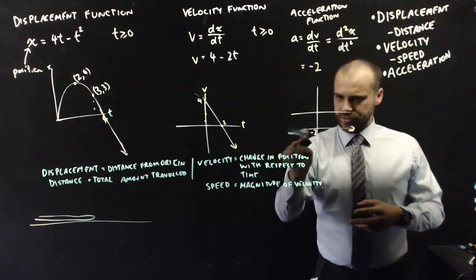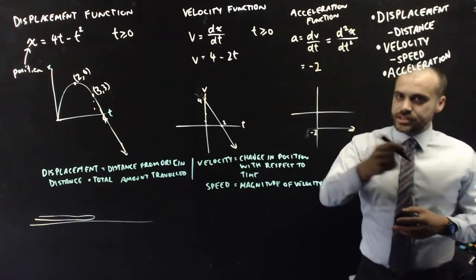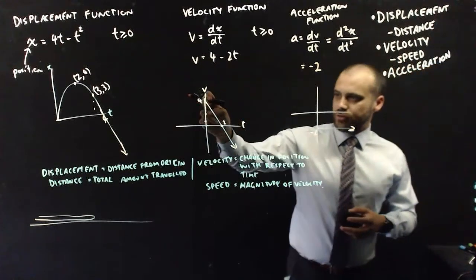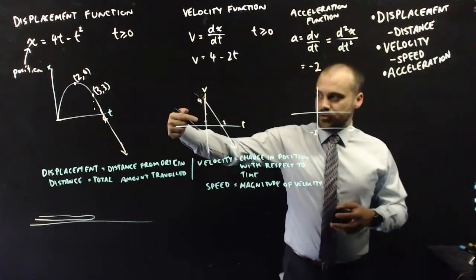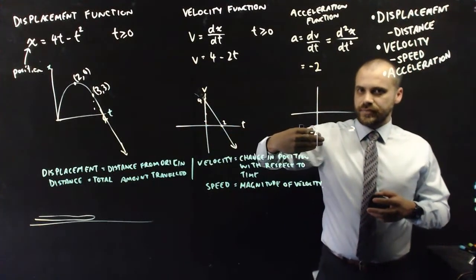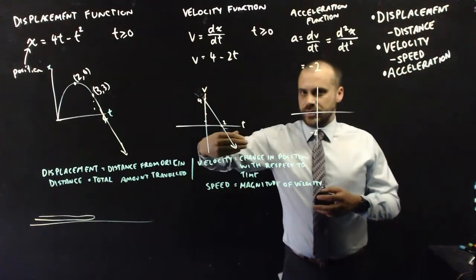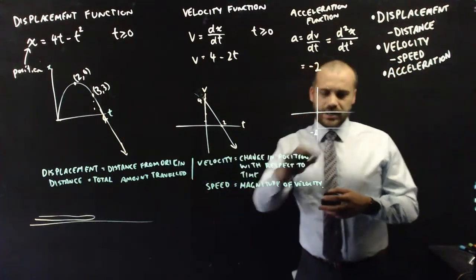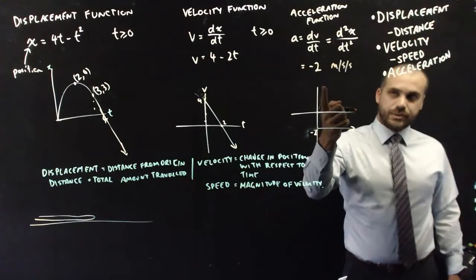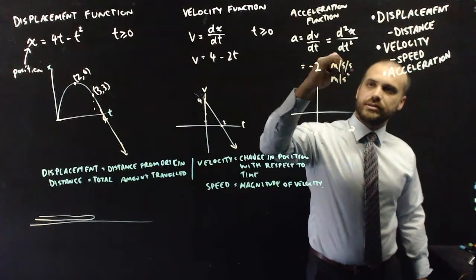That's hard for a lot of people to interpret, but all it's saying is that this object is decelerating at a constant rate. We don't have negative times, so the graph only exists for t ≥ 0. It started off at 4 metres per second, slowing down until it stopped, then decelerating again moving the other way — decelerating at negative 2 metres per second squared.